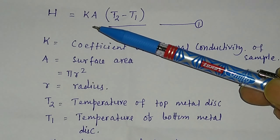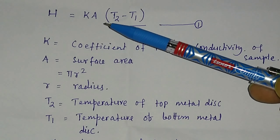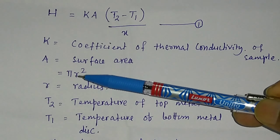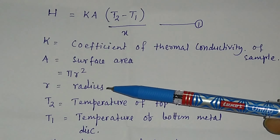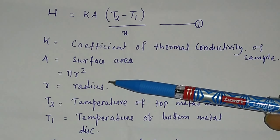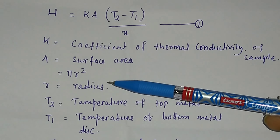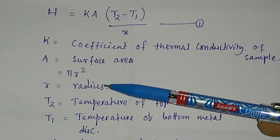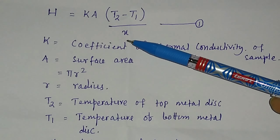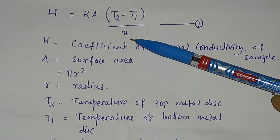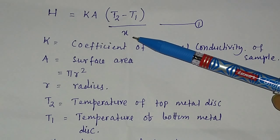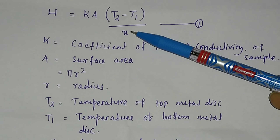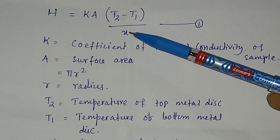To find the area of the sample, since it is a circular disk, the area A = πR², where R is the radius. You can find the diameter using a slide caliper; half the diameter gives the radius. X is the thickness of the sample, which you can measure using a screw gauge.